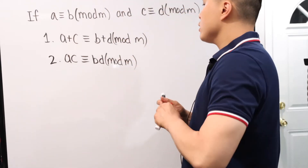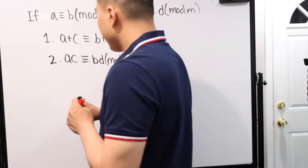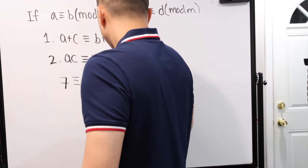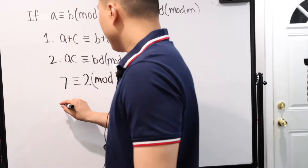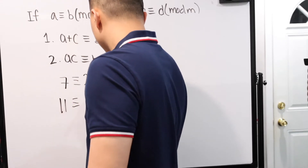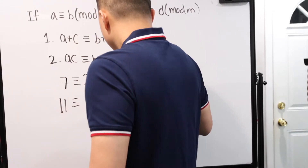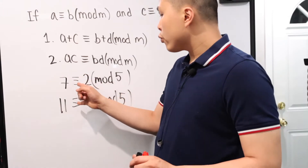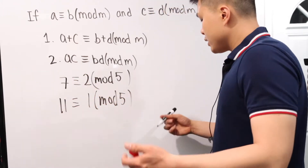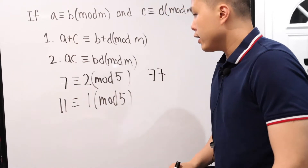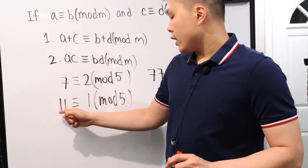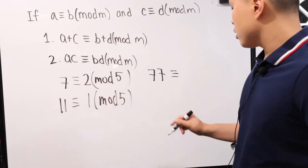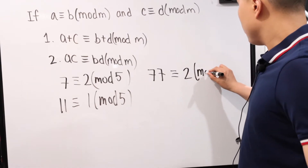For example, let's say 7 is equivalent to 2 mod 5, and 11 is equivalent to 1 mod 5. What if we're working with a larger number? Well, if we know these two, we can work with 77. Since 77 is just 7 times 11, we know the remainder — the mod — is just 2 times 1, which is still equivalent to 2 mod 5.